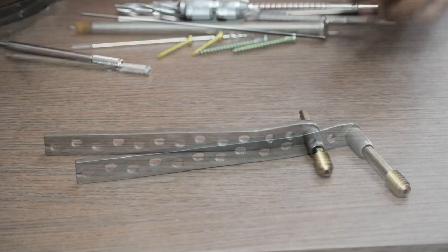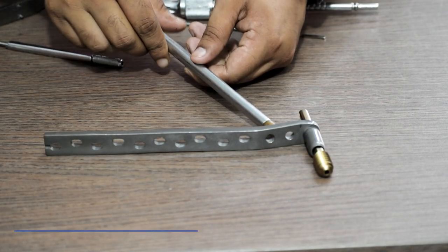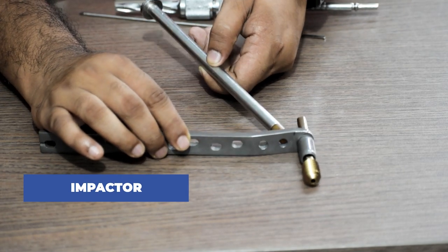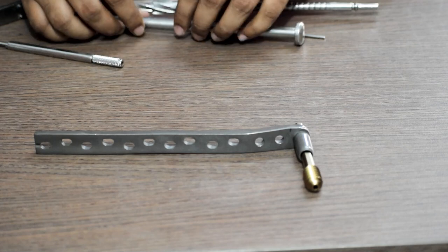Once completely locked, we check if the plate is not aligned. We will use the impactor and hammer it gently until it is properly placed on the bone.